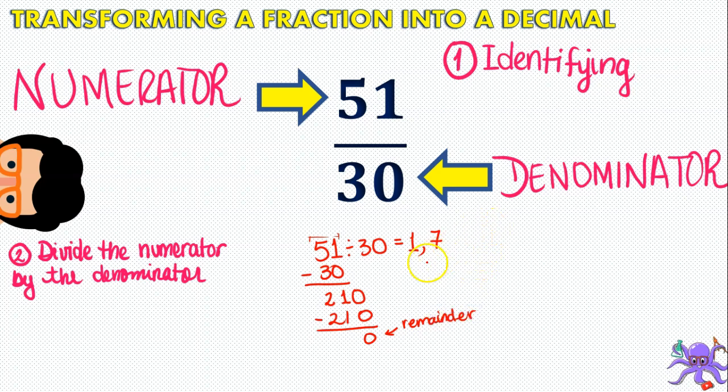So again, in this case, if we want to express 51 divided by 30 as a decimal, we know that's 1.7. Remember that this can also be expressed as 1.7 and repeating zeros to the right, but we're going to keep it simple in this video and not add those zeros, because the answer is not going to change.